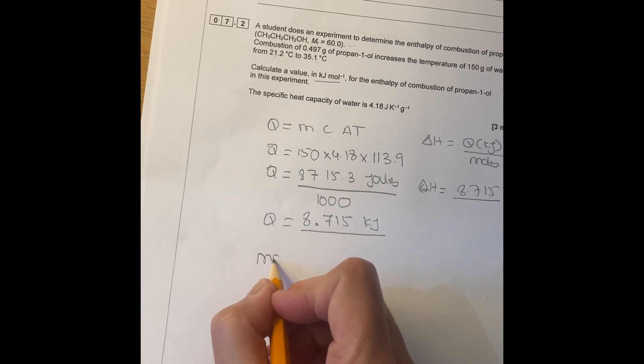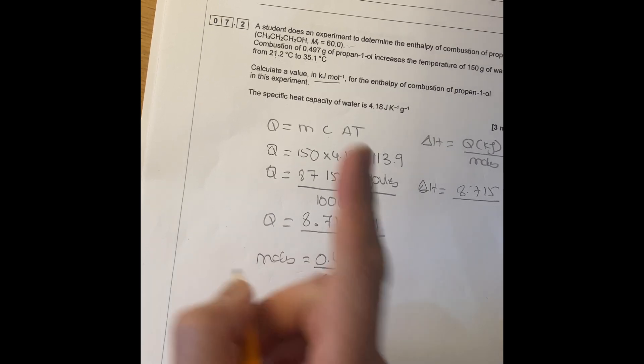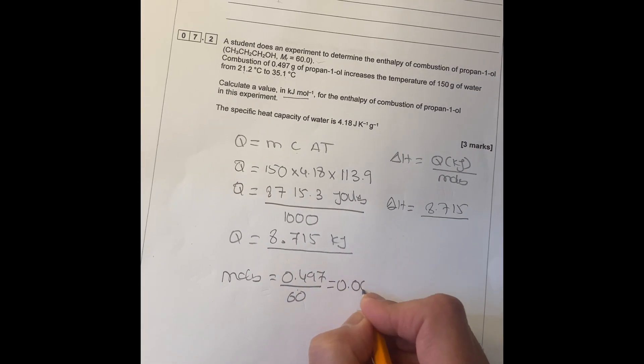So moles equals to 0.479 divided by 60, which is the molar mass given here. So that gave me 0.008283 moles.